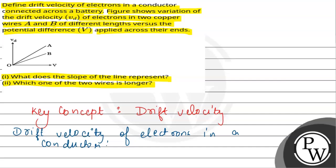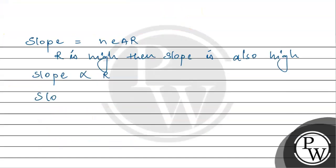Now if we look at the graph, slope of A is greater than slope of B. This means the resistance of A will be greater than the resistance of B.